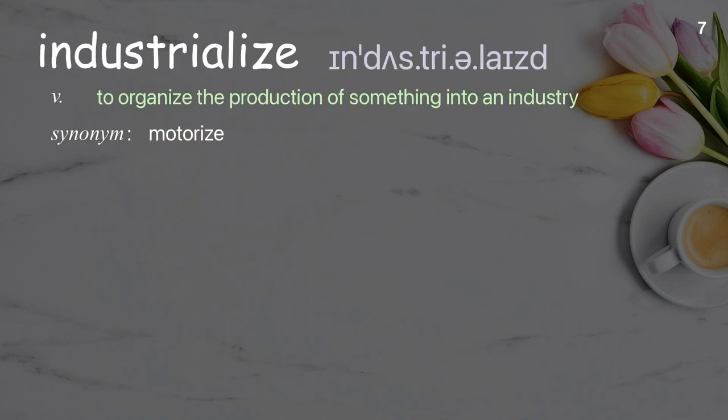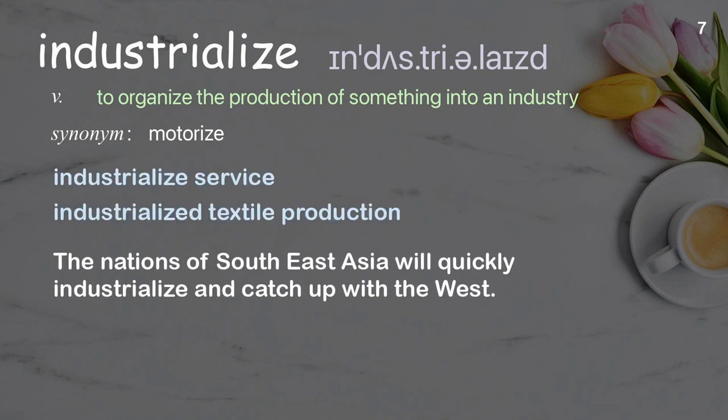Industrialize: to organize the production of something into an industry. Examples: industrialized service; industrialized textile production; the nations of Southeast Asia will quickly industrialize and catch up with the West.